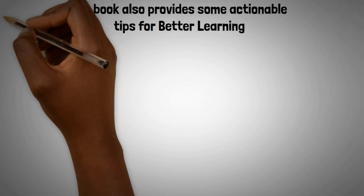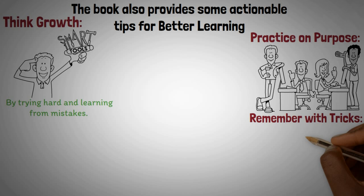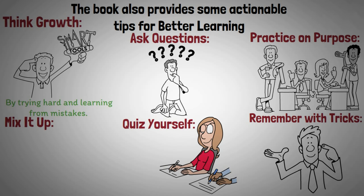The book also provides some actionable tips for better learning. My favorites are: think growth. Believe that you can get smarter by trying hard and learning from mistakes. Practice on purpose. Keep pushing yourself to try new things and solve hard problems. Remember with tricks. Use memory aids to help you keep track of what you learn. Ask questions. Regularly check if you understand by asking yourself questions. Quiz yourself. Keep testing yourself on what you've learned. And mix it up. Study different things in one session to help your brain keep track of it all.